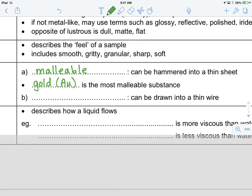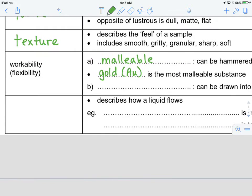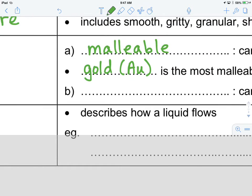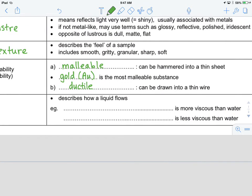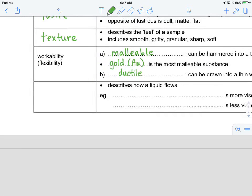Another property, though, that talks about how workable something is, is what's known as how ductile something is. And this means, when something is very ductile, it can be drawn into a thin wire. The last physical property we're going to talk about describes how a liquid flows, and this is known as viscosity.